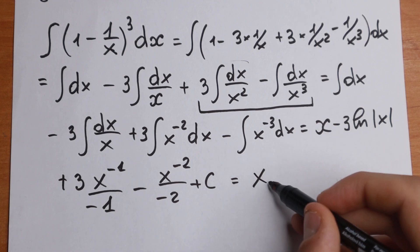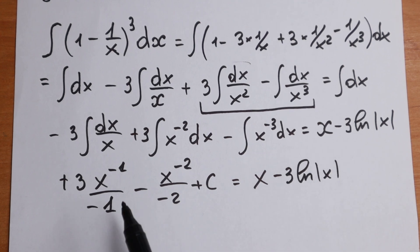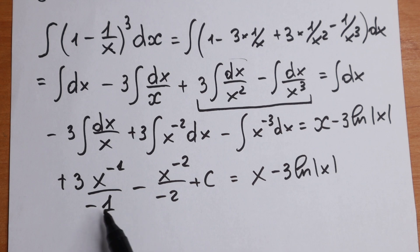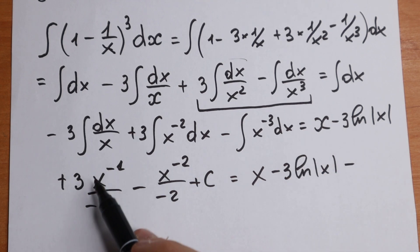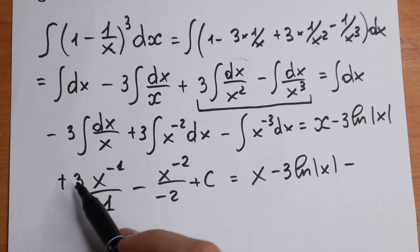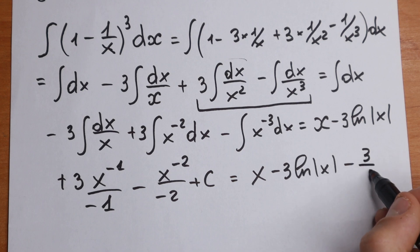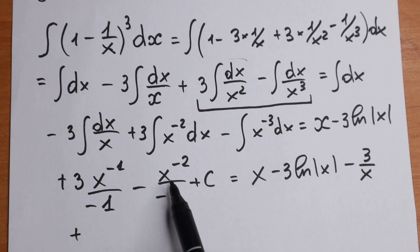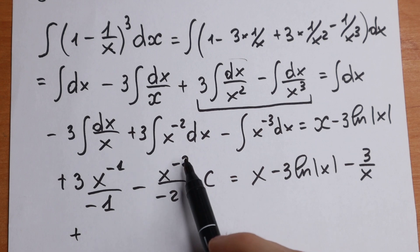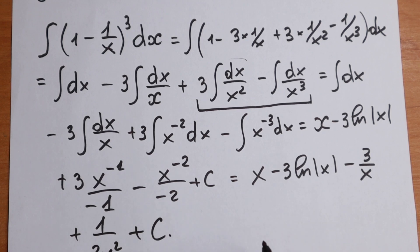Now let's write the final simplified answer. The first term x stays the same. Then minus 3·ln|x|. Next, the x⁻¹ moves to the denominator giving −3/x. And the last term simplifies to +1/(2x²), plus the constant C.